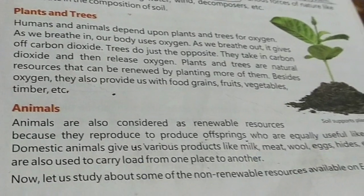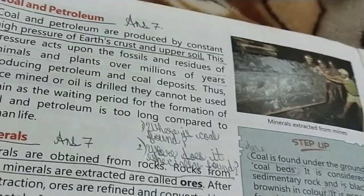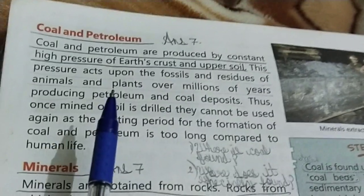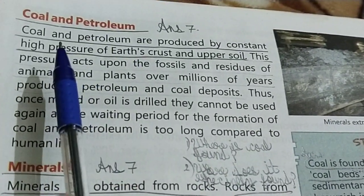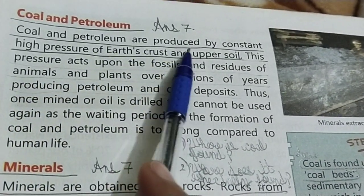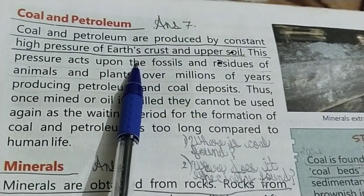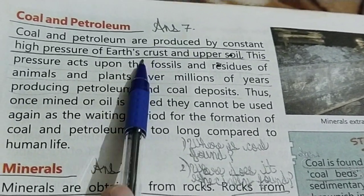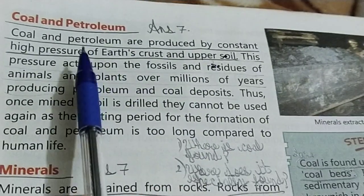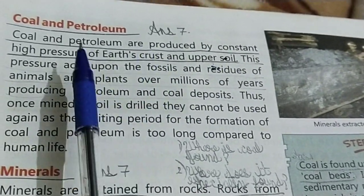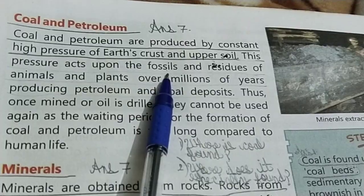Now we are going to discuss non-renewable resources available on earth. First is coal and petroleum. Coal and petroleum are non-renewable because it takes a lot of time to form them again. Coal and petroleum are produced by constant high pressure of earth's crust and upper soil. This pressure acts upon the fossils.